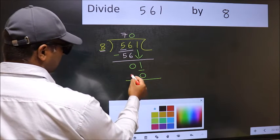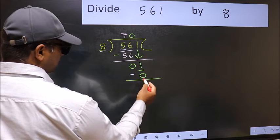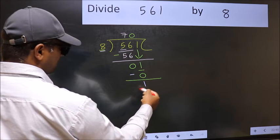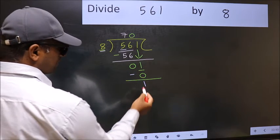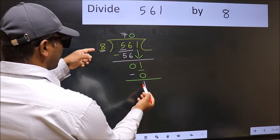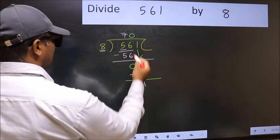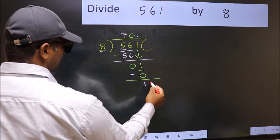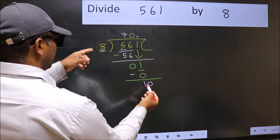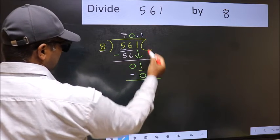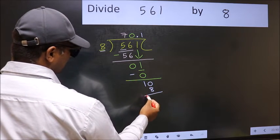Now we should subtract. 1 minus 0 is 1. Over here, we did not bring any number down and 1 is smaller than 8. So now you can put dot and take 0. So 10. A number close to 10 in 8 table is 8 once, 8.